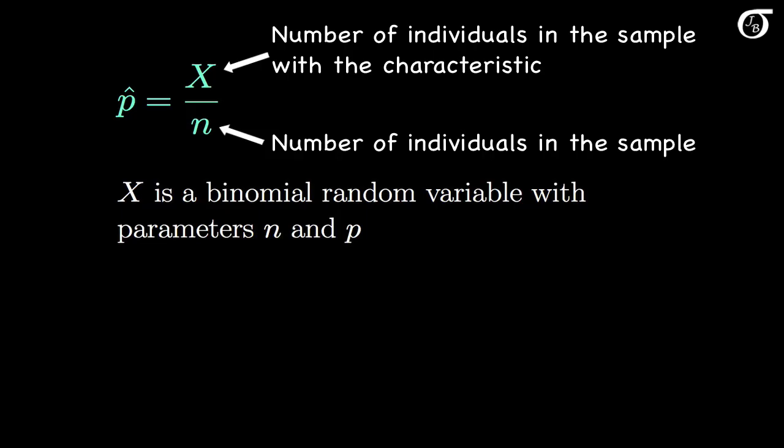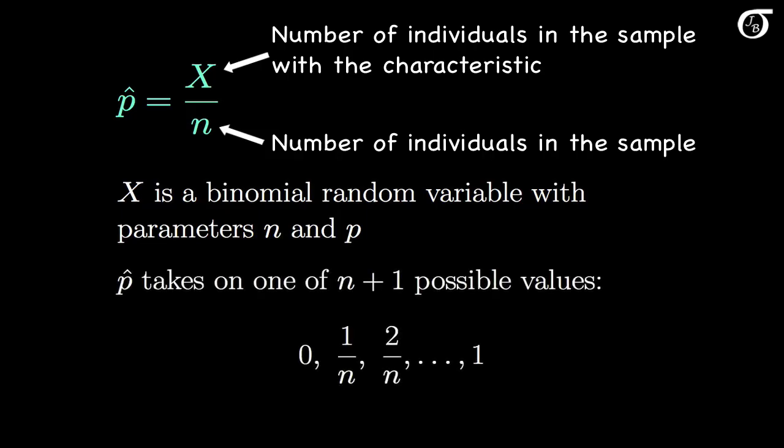Like the binomial random variable x, the sample proportion P-hat is a discrete random variable. When we draw a sample, P-hat will take on one of n plus 1 possible values: 0, 1 over n, 2 over n, up through 1. The probabilities of these values correspond to the probabilities that the binomial random variable x takes on the values 0, 1, 2, up through n.